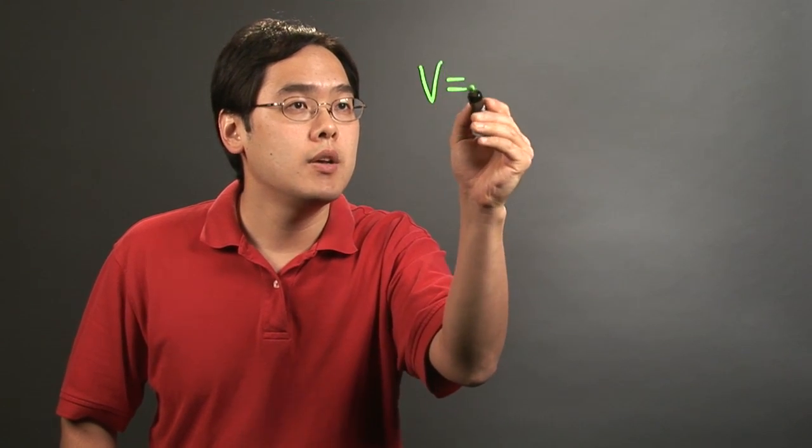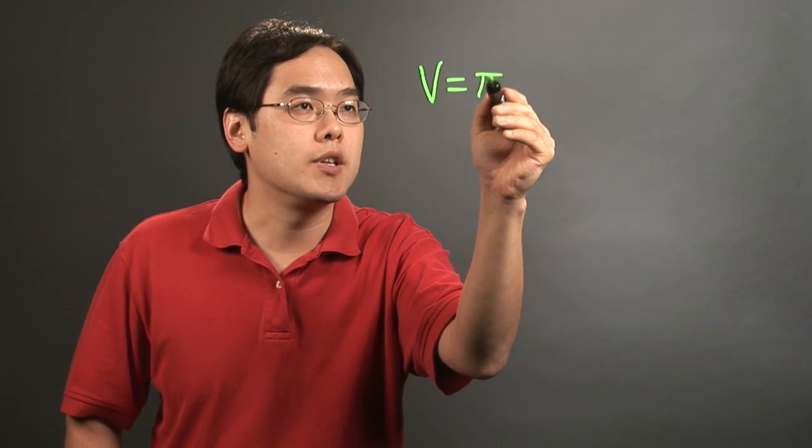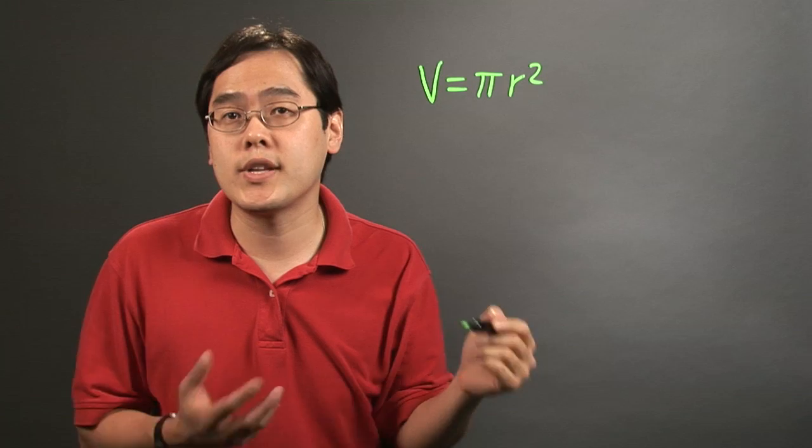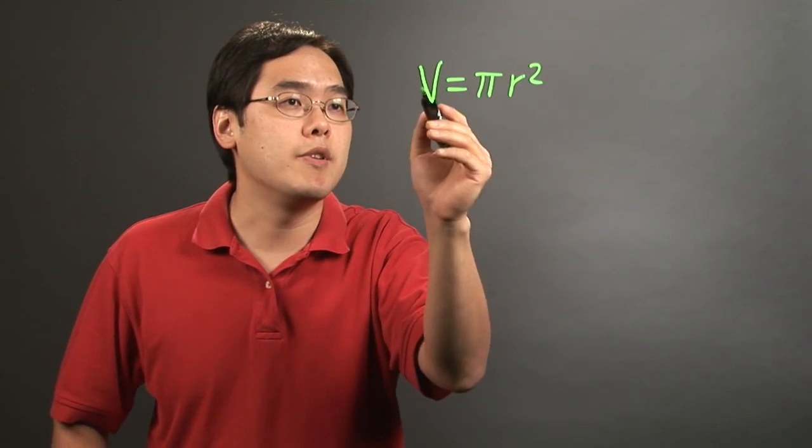Now you want to start off with the volume of a cylinder. The volume, assuming it's a right circular cylinder mind you, is going to be V = πr²h.